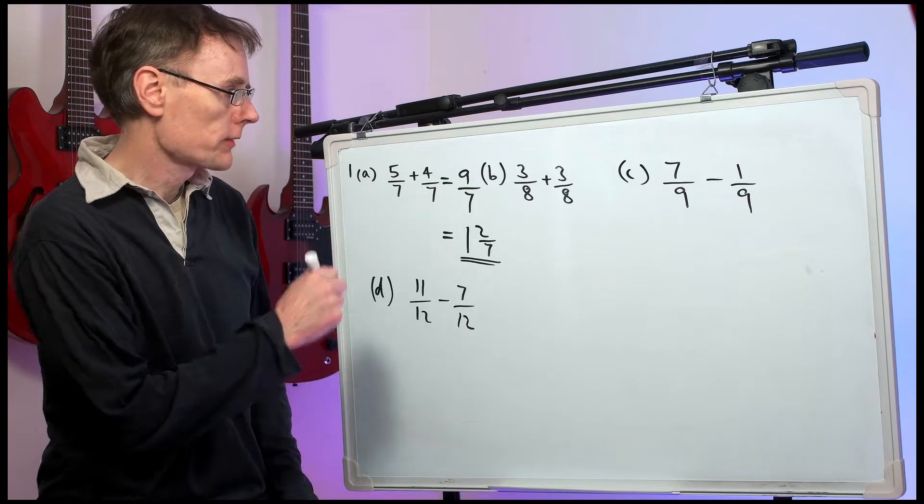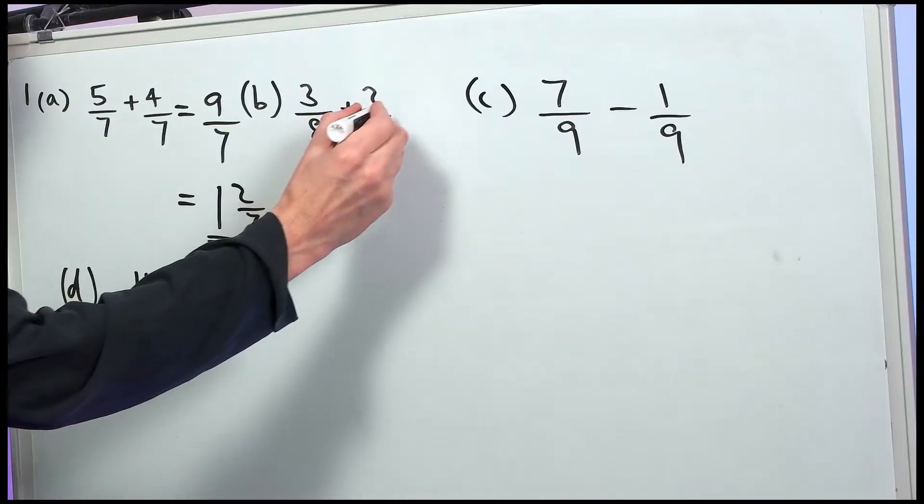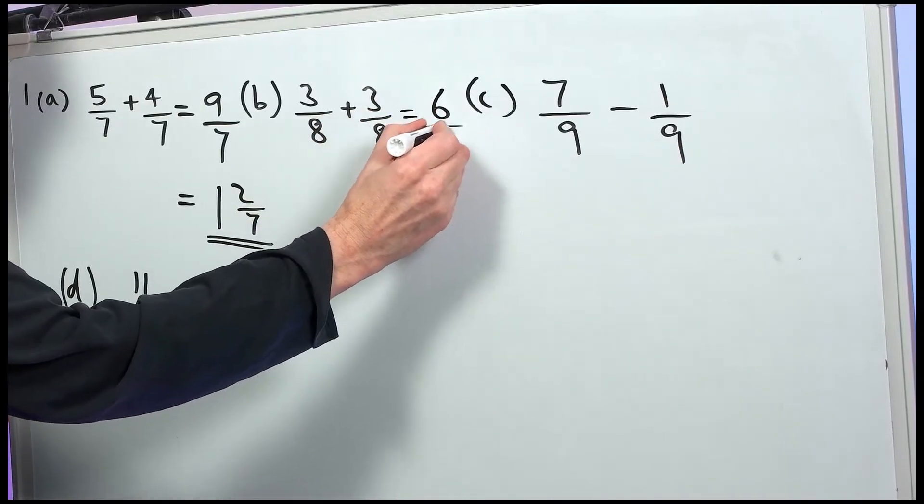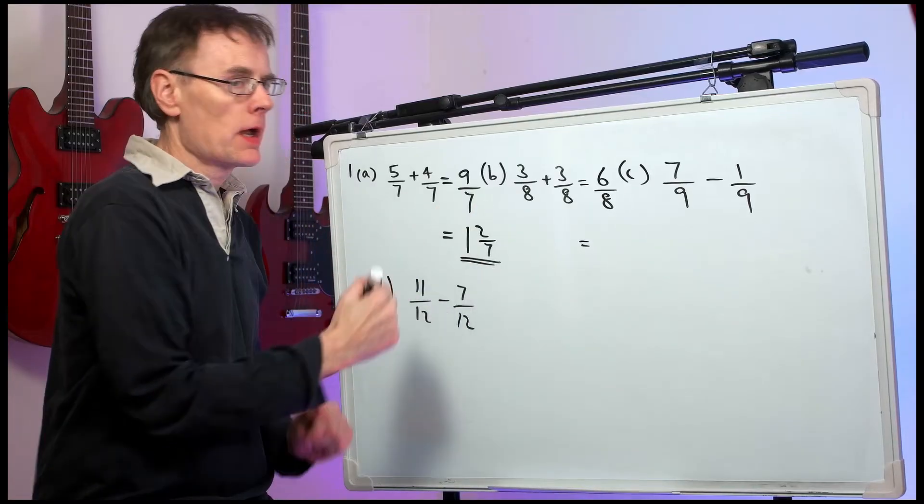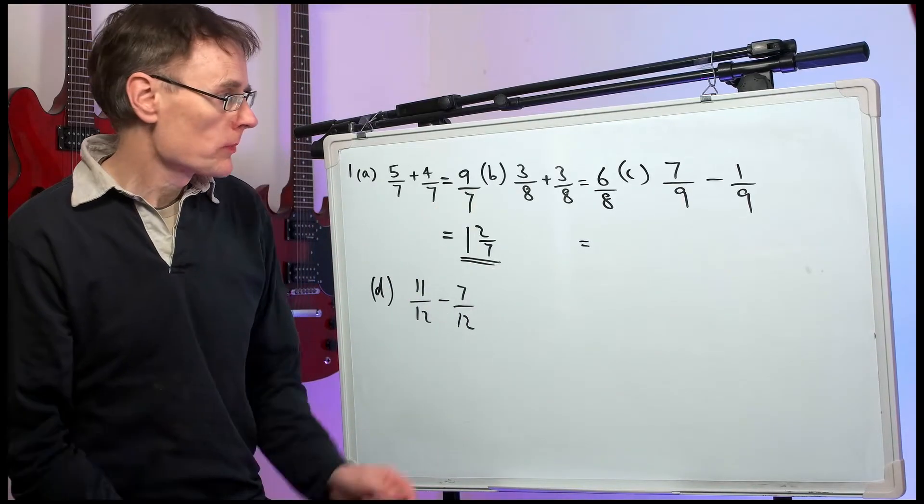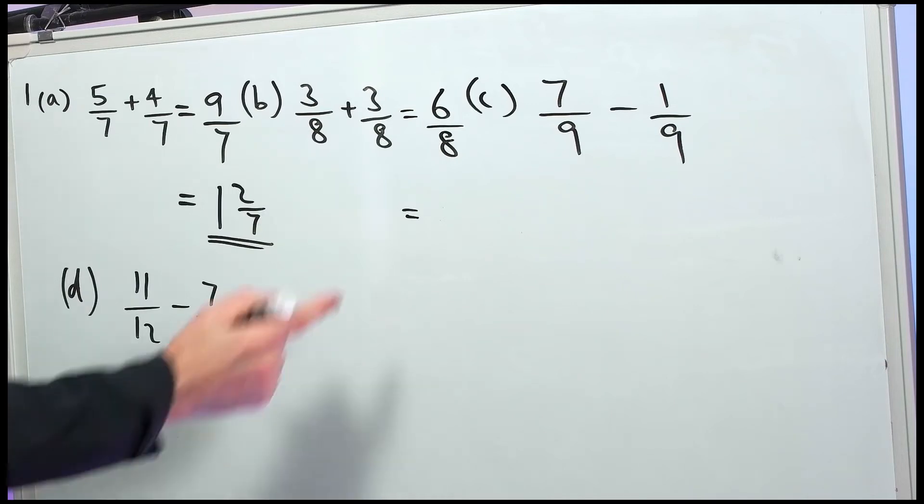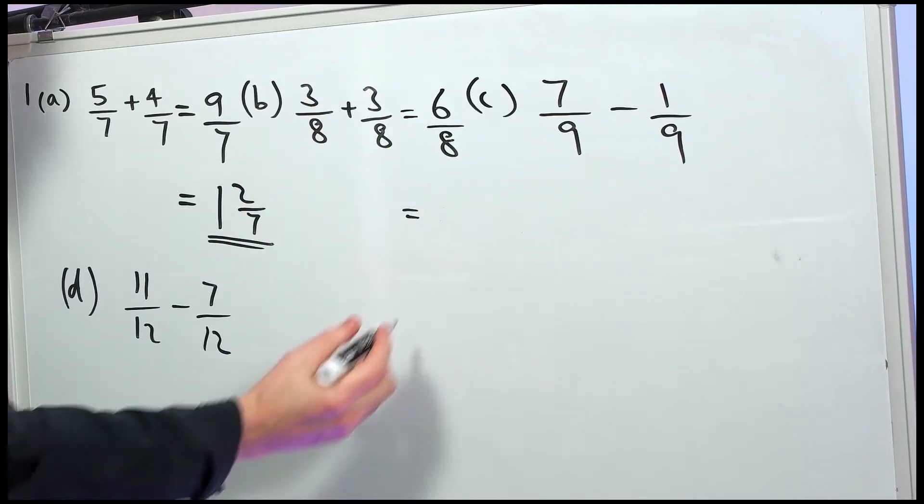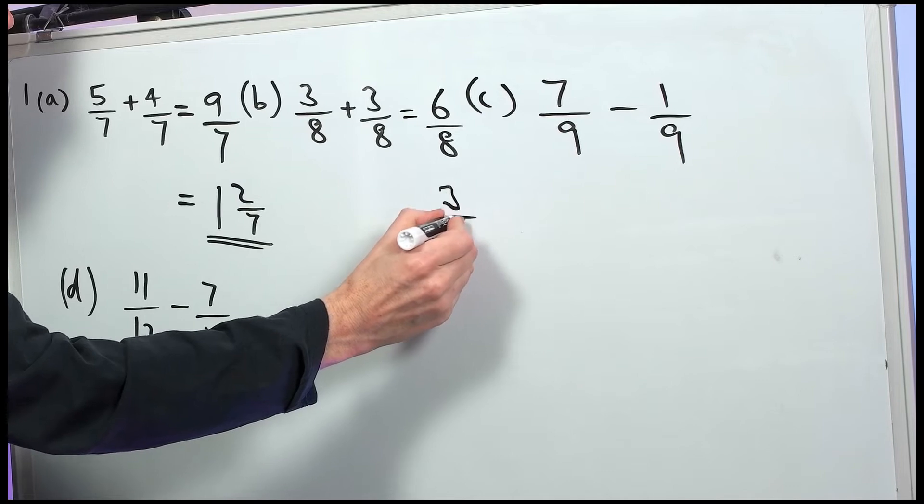Now, part B, we have 3 eighths plus 3 eighths. So that makes 6 eighths. But again, that gives you 1 mark out of 2. You need to reduce that to its lowest terms. Here we can divide the top and bottom by 2 to get 3 quarters.